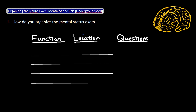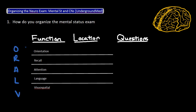I like to remember these five main functions with the mnemonic ORAL V, in which O stands for orientation, R stands for recall, A stands for attention, L stands for language, and V stands for visual spatial. Each function is associated with a specific region or regions of the brain and has common questions that are used to test it. Let's go through them one by one.